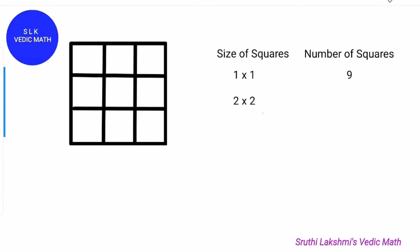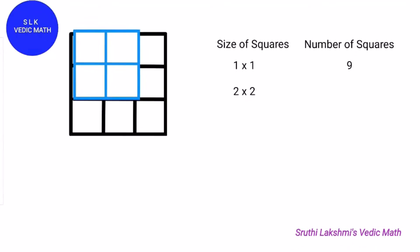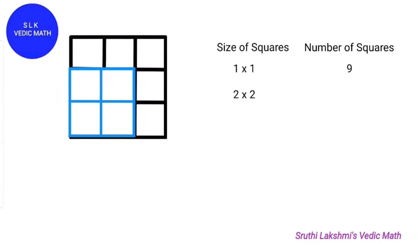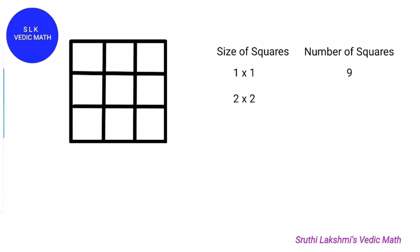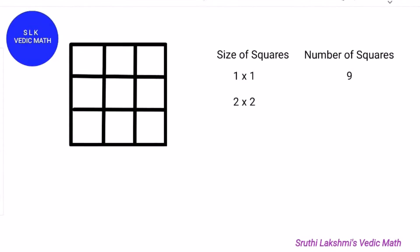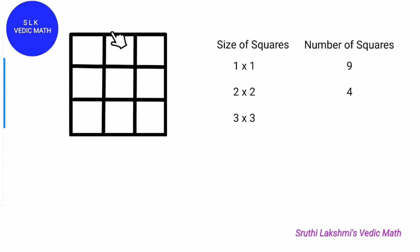Next, find how many 2 by 2 squares there are: 1, 2, 3 and 4. So there are 4 two-by-two squares. Next, find how many 3 by 3 squares there are. There is 1 three-by-three square.